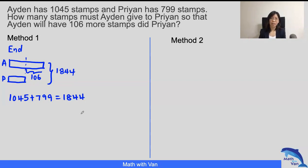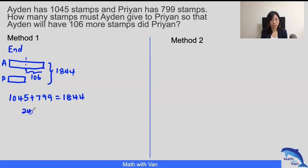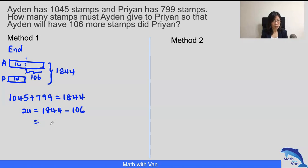Because the number of stems that Aiden gives will be the same number of stems that Brian received. So it doesn't matter whose stems I need to find out in the end. In this case, since it'll be easier, I want to find out Brian's amount. So just take 1844 minus 106, and that will give us two units. So one unit here and the other unit over there, and that gives us a total of 1738. So one unit is 1738 divided by 2, and that will give us 869.